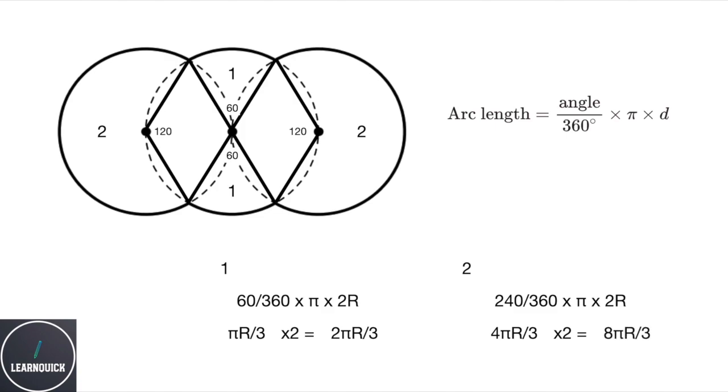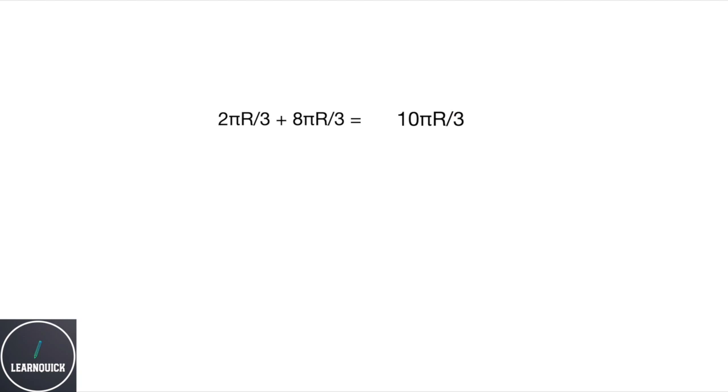Now all we have to do is add these up. So 2 pi r over 3 plus 8 pi r over 3 gives 10 pi r over 3. And this is our answer.